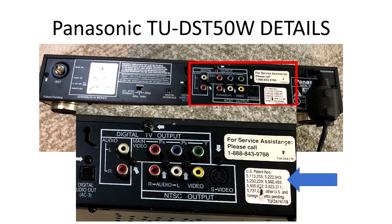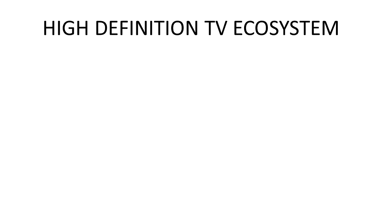Today there would likely be a website instead of or in addition to a phone number. The product was also marked with relevant patents. It's not unusual today to simply put a sticker with a link to a website listing all the patents, rather than listing all the numbers directly on the product — but that was not common practice in 1999.